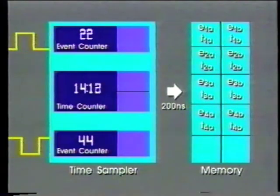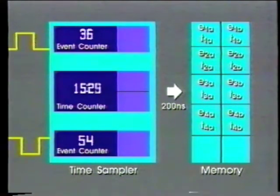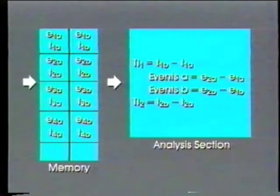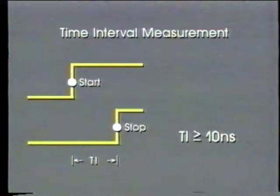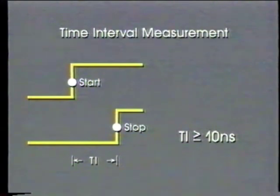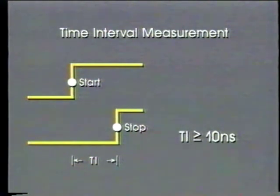If events happen faster than this, they will be counted but not timed. The calculation shows the time interval measurements and notes the events that were not time tagged on each channel. With time interval measurements, you always measure from a start to a stop. The result is always positive, and the minimum interval is 10 nanoseconds.